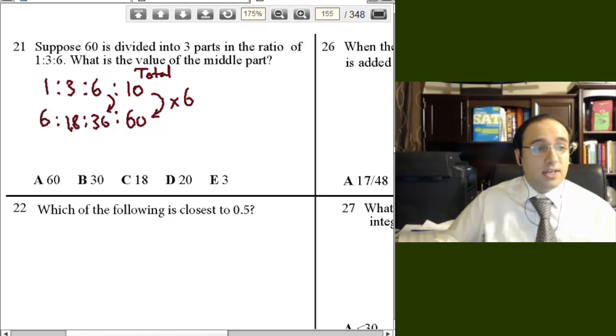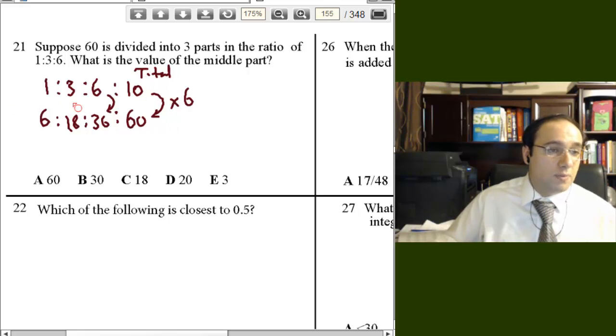6 plus 18, 24. 24 plus 36, 60. So, you're right. The question was, what is the value of the middle part? Where is the middle part? The 18. So, the answer is C.